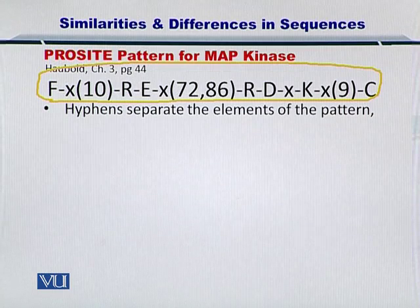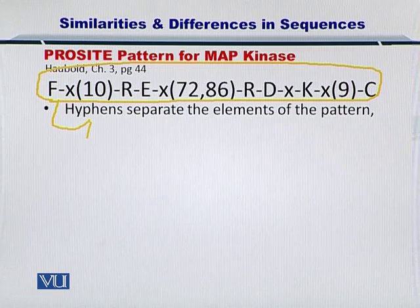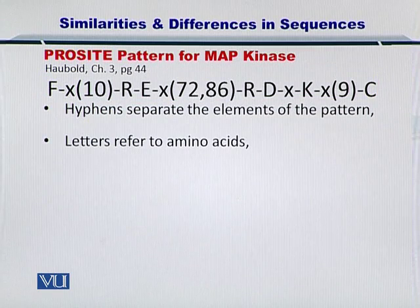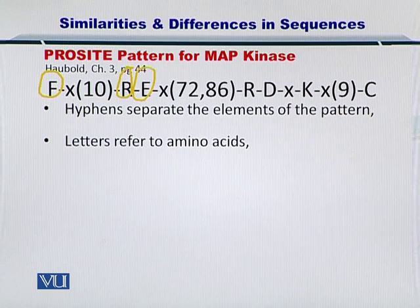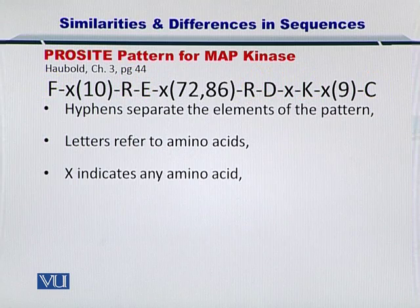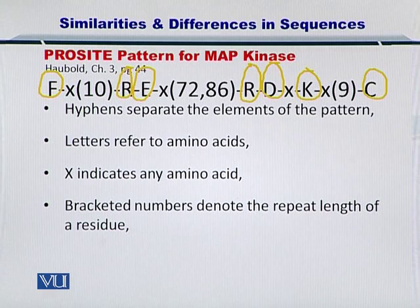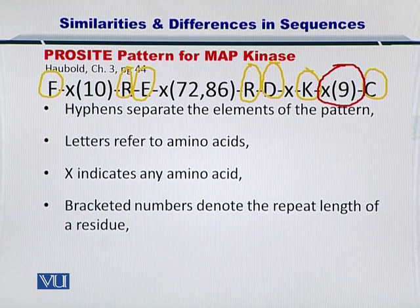Starting with the hyphens: the hyphens separate the elements of the pattern, so all hyphens are essentially separating amino acids from each other. Next, letters refer to the amino acids — for example, R, D, A, and C. X indicates any amino acid from the 20 different amino acids. The bracketed numbers denote the repeat length — so X repeated nine times means any amino acid occurring nine times.